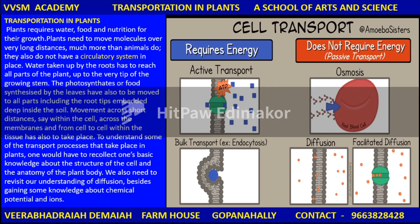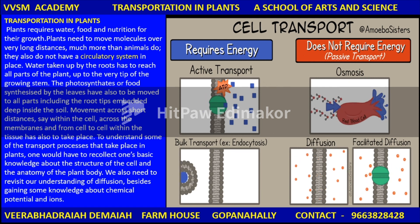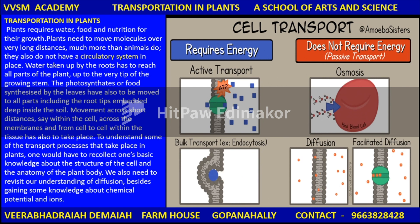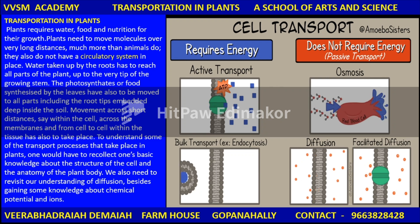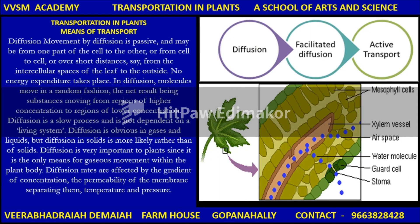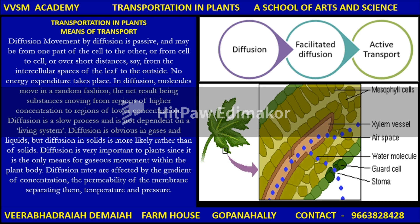Cell transport that requires energy is called active transport, while osmosis does not require energy and is therefore passive transport. Means of transport include diffusion, which is very important — the diffusion of molecules through xylem and phloem — as well as through stomata, the pores in the leaf.